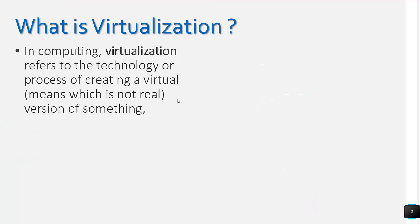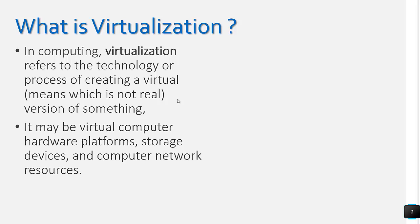Before we understand virtualization, first we understand what is the meaning of 'virtual.' Anything which is not real is known as virtual. The same thing we have used in computing. So virtualization can be defined as a technology or the process by which we create a virtual version of something — and that something can be hardware, a storage device, a computer network resource, or a complete computer machine.